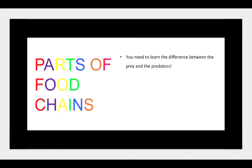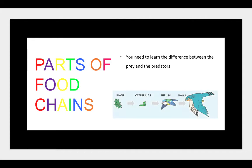You need to learn the difference between prey and predators. In food chains it's possible to identify animals which are killed and eaten, i.e. the prey, and animals that do the killing, i.e. the predators. The producer — the plant — is neither. So look at this food chain: can you work out which consumers are prey and which are predators?